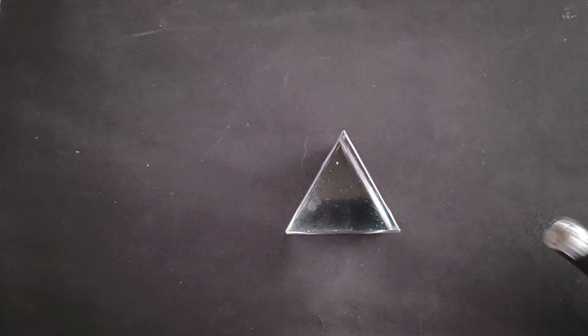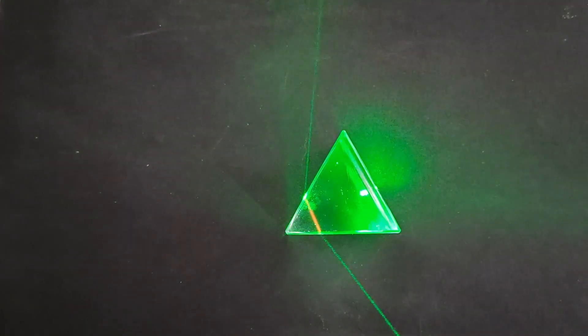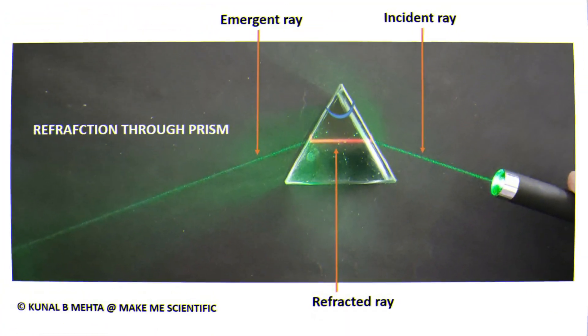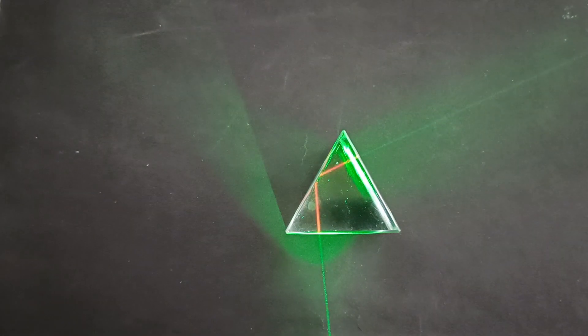Here we see the total internal reflection taking place, and that's because the incident ray striking this surface has angle more than the critical angle.